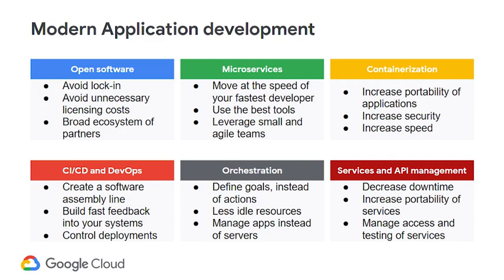The area of services and management is about observability — understanding what is happening in the system, the health of the system, capturing essential metrics from source level up to the services, service level objectives, and so forth. Whether the system is healthy or not, you're able to tap into any metrics you're monitoring, and if they go above or below a threshold you've set, you get notified and the right actions are taken. These are the key trends constituting modern application development.